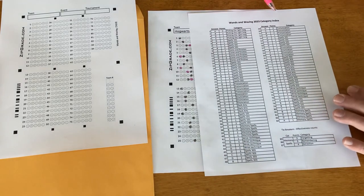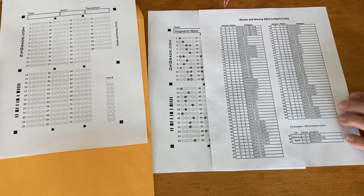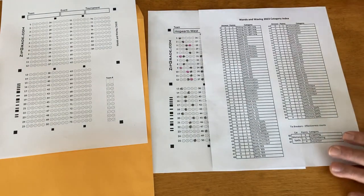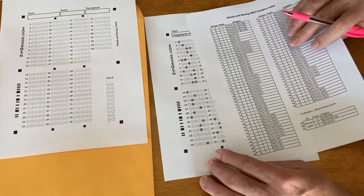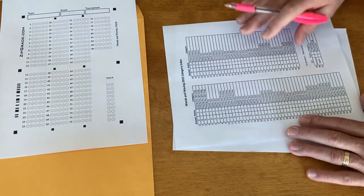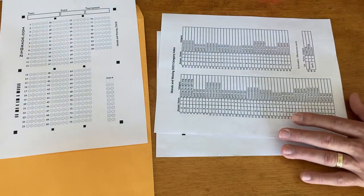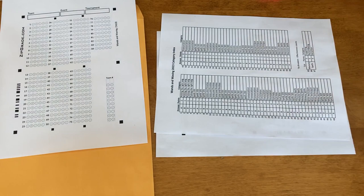That's how you use the category index combined with the zip grade forms that you already have. We will be releasing these in the last week of March. In addition to all these zip grade forms, there are other score sheets, but we'll talk about that in a separate video.